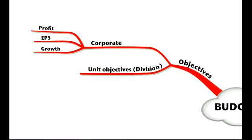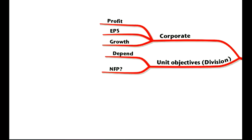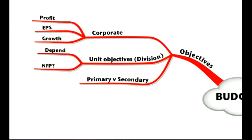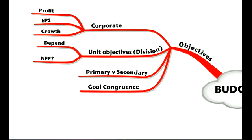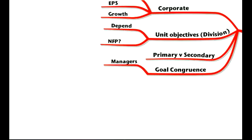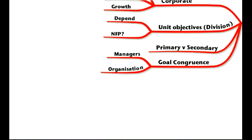Remember that these will be different from unit objectives, say maybe for a division or a section. Unit objectives will depend on the type of unit you have, and it will also change if they're a not-for-profit organisation. Remember that there will be primary goals and secondary goals. Your secondary goals will support your primary ones — the core objectives you must achieve. And all of this must ensure goal congruence, which is making management and employees work together to achieve whatever goals are in place, so managers and the organisation must have the same objectives.